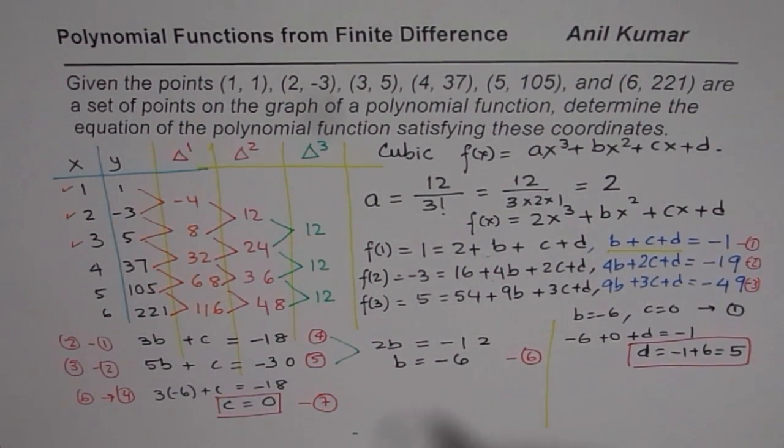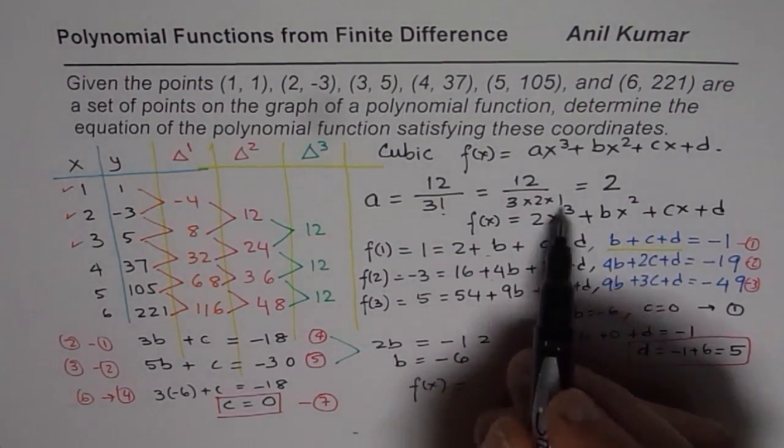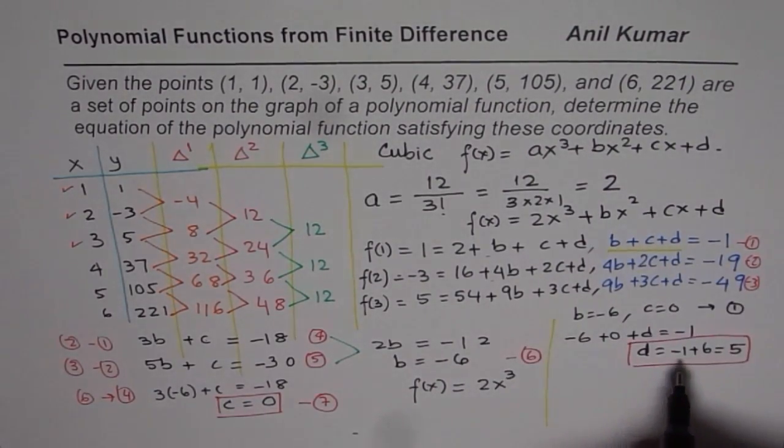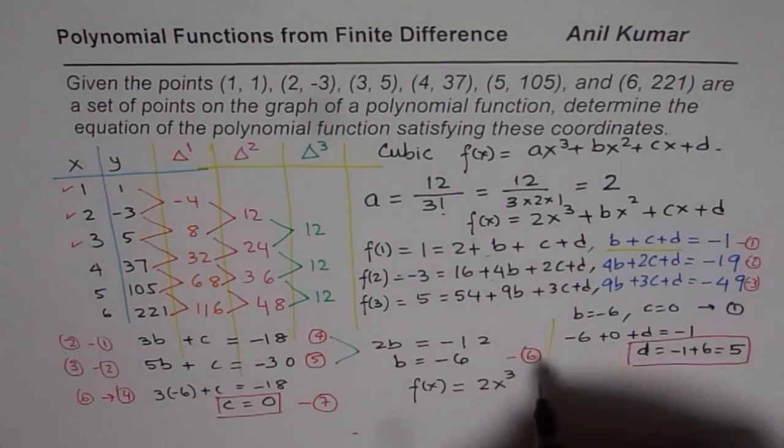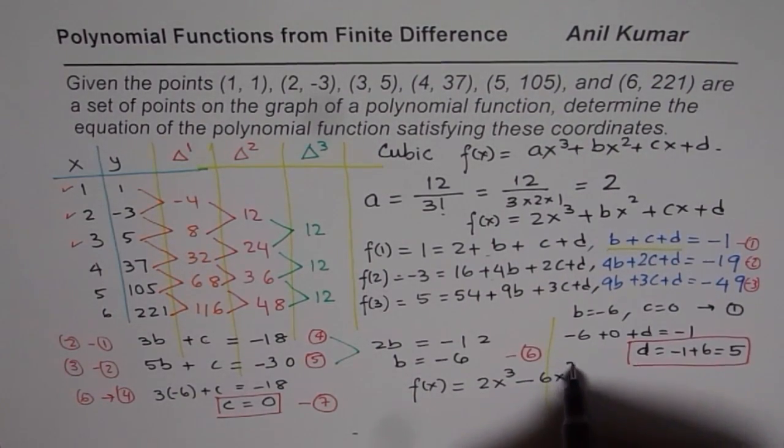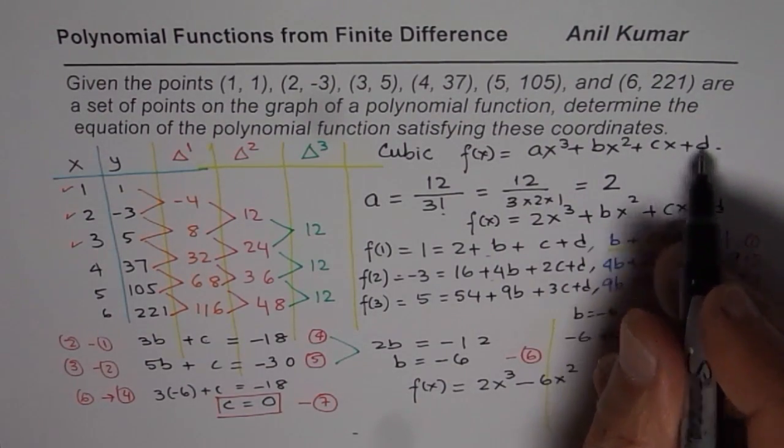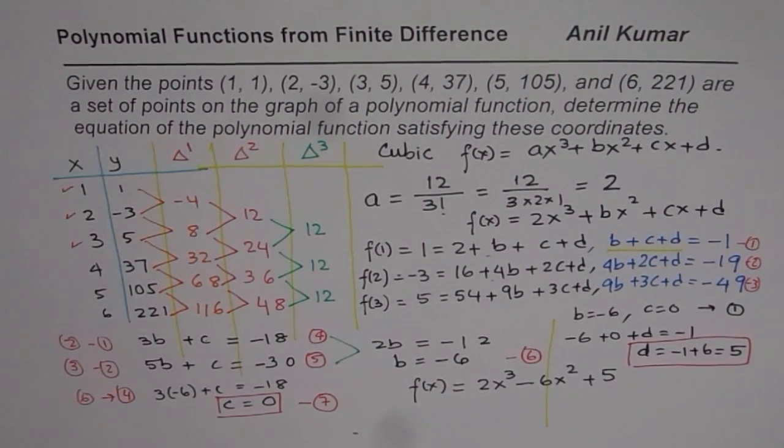So once we know that d is 5, we know our equation. So now we can write the function f(x) equals 2x³, b is -6, so -6x², c is 0, so we have no linear term, and d is 5, so plus 5.